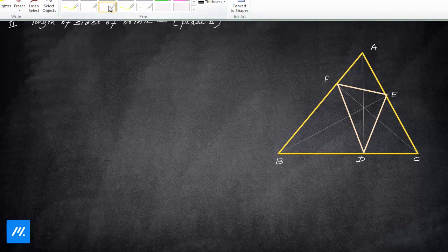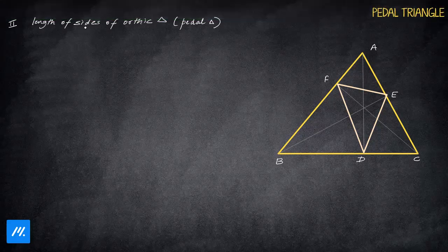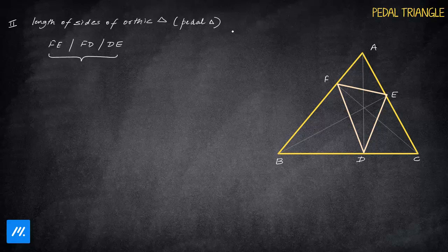Okay, the next property that we have to find is the length of the sides of the orthic triangle. So the target is to find FE length, then the FD length or the DE length, and by symmetry we can find any one of them, then by symmetry we can easily find the others.